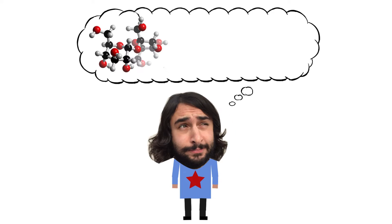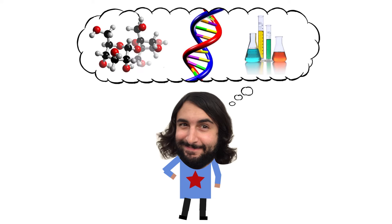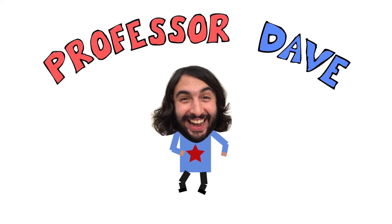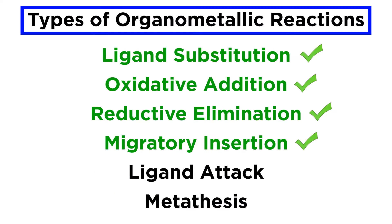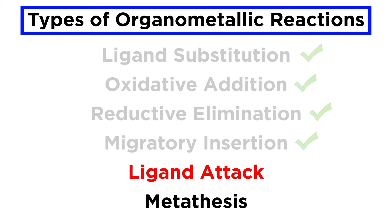Professor Dave Explains. We've learned a few types of organometallic reactions, and all of these involved changes occurring with metal-ligand bonds. Now let's take a look at reactions that can occur on the ligands themselves, as these will also be quite common.